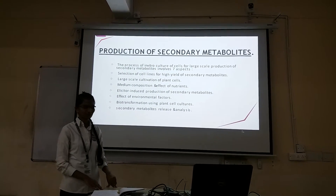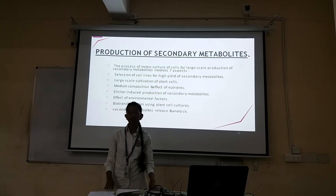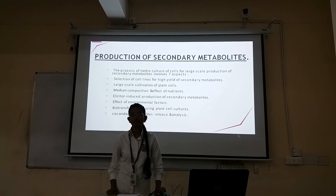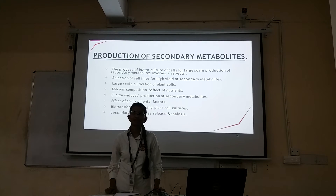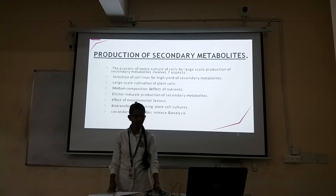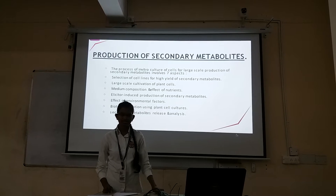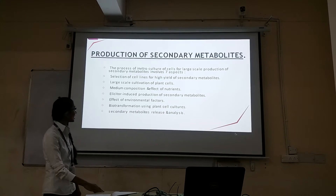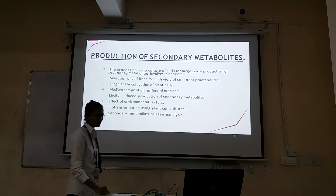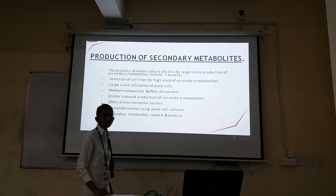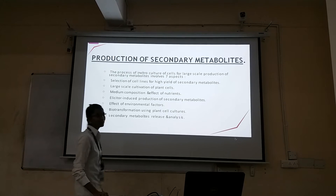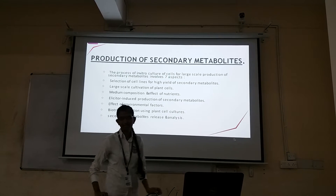The process of microculture of cells for large scale production of secondary metabolites involves 7 aspects: selection of cell lines for high yield of secondary metabolites, large scale cultivation of plant cells, medium composition and effect of nutrients, elicitor-induced production, effect of environmental factors, bio-transformation, and secondary metabolites release and analysis.